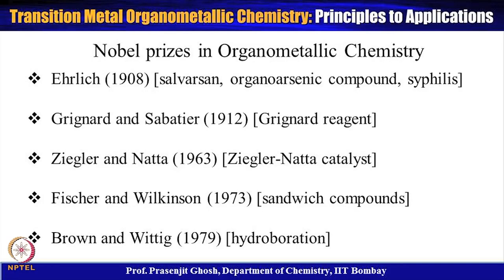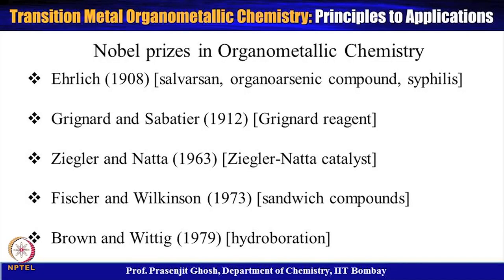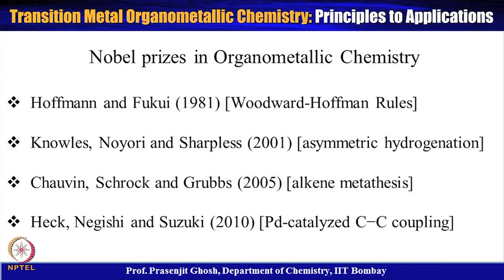To give you a feel for how important this field is, nine Nobel Prizes have been awarded in the area of organometallic chemistry. That starts with 1908 for organo-arsenic compounds, followed by Grignard and Sabatier for the Grignard reagent in 1912, Ziegler-Natta in 1963 for the Ziegler-Natta catalyst in polymerization, Fischer and Wilkinson in 1973 for sandwich compounds, and Brown in 1979 for the hydroboration reaction.